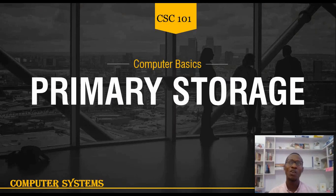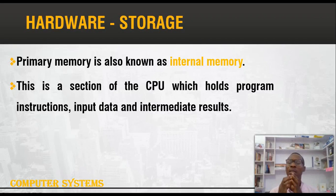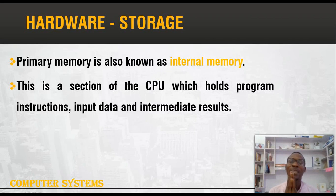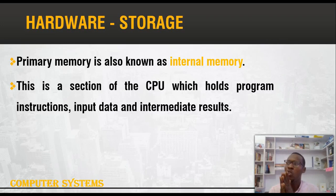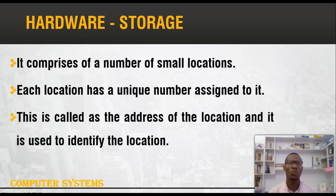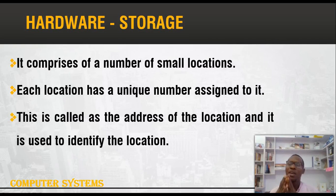Primary storage is the main memory of a computer system, also known as internal memory. It is a section of the processing unit. If you recall from our videos on the processing unit, we talked about CPU and memory, and we said we use memory to hold intermediary results or data input into the system during processing operations. Internal memory or primary storage works hand in hand with the CPU. This primary storage is made up of small locations.